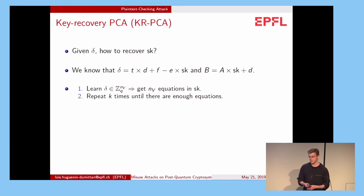We can learn delta, and if delta is in ZQ to the power NV, it means that we get NV equations in the secret key. And we can repeat this process K times until we have enough equations to solve for all the components of the secret key.